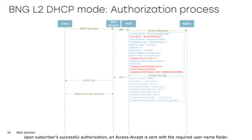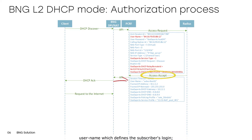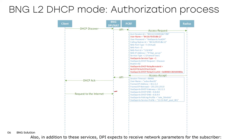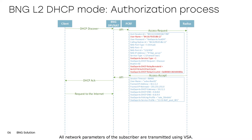Upon subscribers' successful authorization, an access accept is sent with the required username fields: the user name which defines the subscriber's login, and the list of services and policing that are enabled for the subscriber. In addition to these services, DPI expects to receive network parameters for the subscriber — IP address, mask, gateway IP address, DNS server addresses, etc. All network parameters of the subscriber are transmitted using VSA.